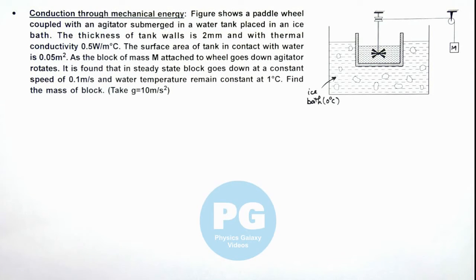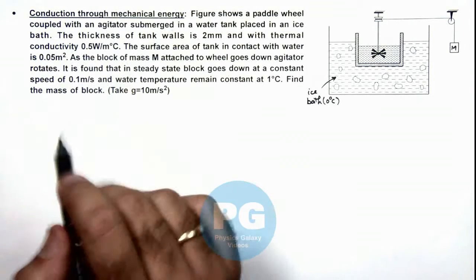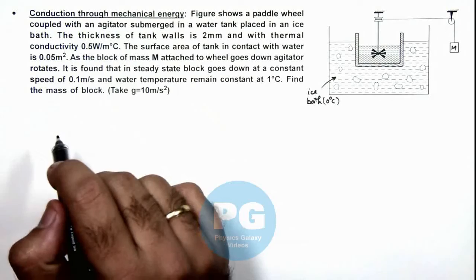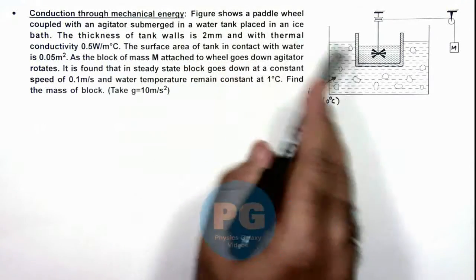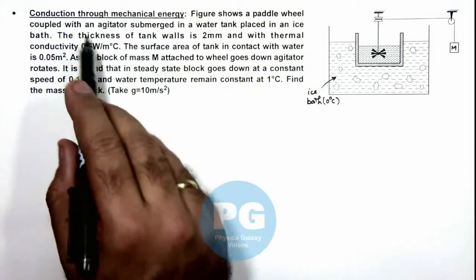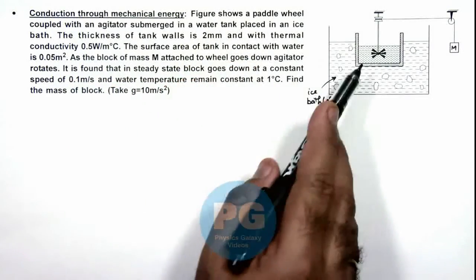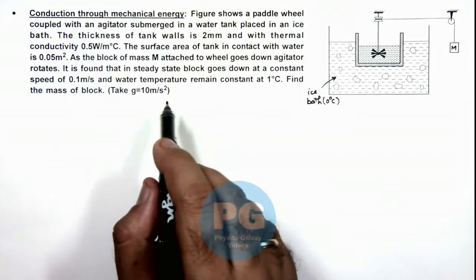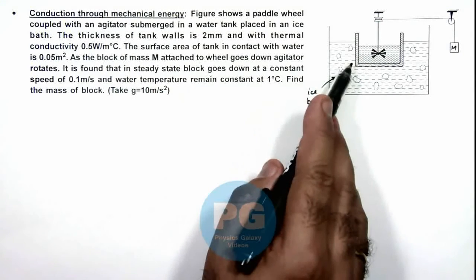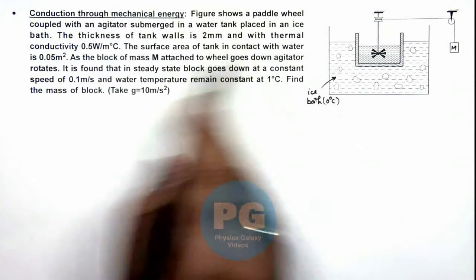In this illustration we'll discuss conduction through mechanical energy. The figure shows a paddle wheel coupled with an agitator, submerged in a water tank placed in an ice bath. The thickness of the tank walls is 2 mm, and the thermal conductivity is given.